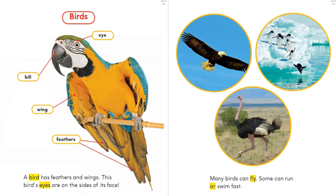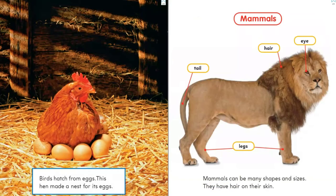Birds. A bird has feathers and wings. This bird's eyes are on the sides of its face. Let's look at the parts of a bird: eye, feathers, wing, bill. Many birds can fly; some can run or swim fast. Birds hatch from eggs. This hen made a nest for its eggs.